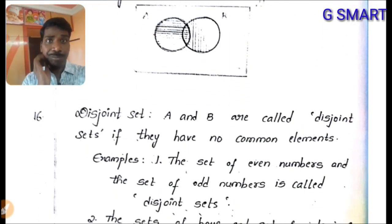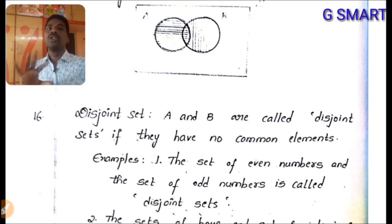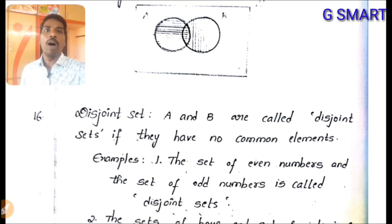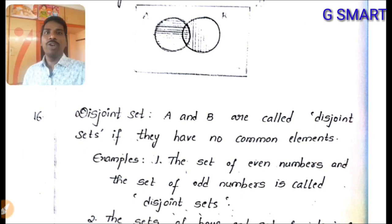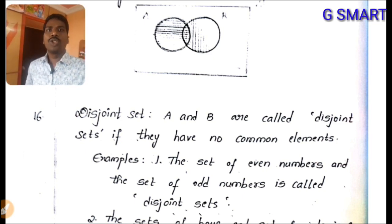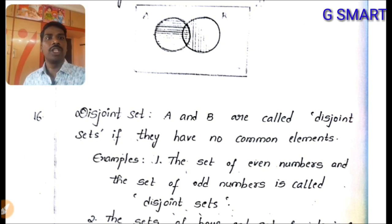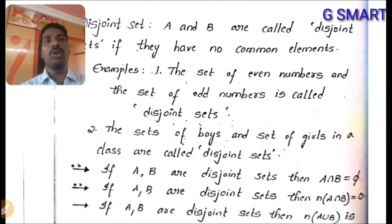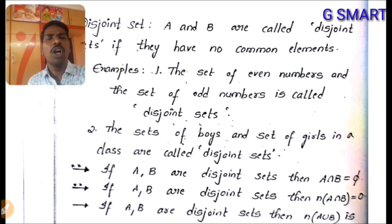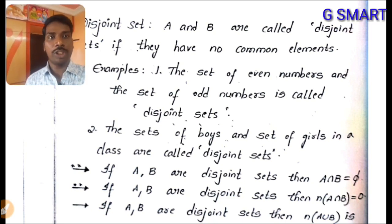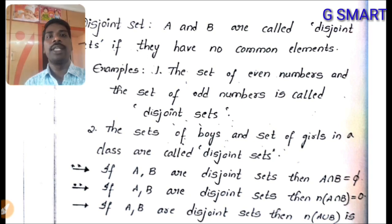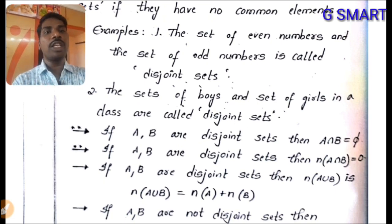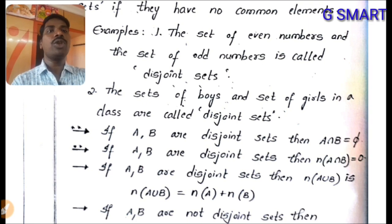Disjoint sets: if two sets A and B have no common elements, they are called disjoint sets. Examples: the set of boys and the set of girls; the set of even numbers and the set of odd numbers. If A and B are disjoint, then A ∩ B = φ, n(A ∩ B) = 0, and n(A ∪ B) = n(A) + n(B).